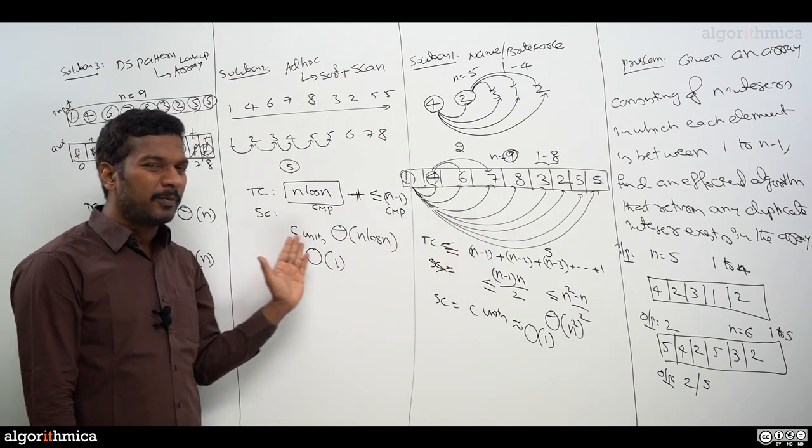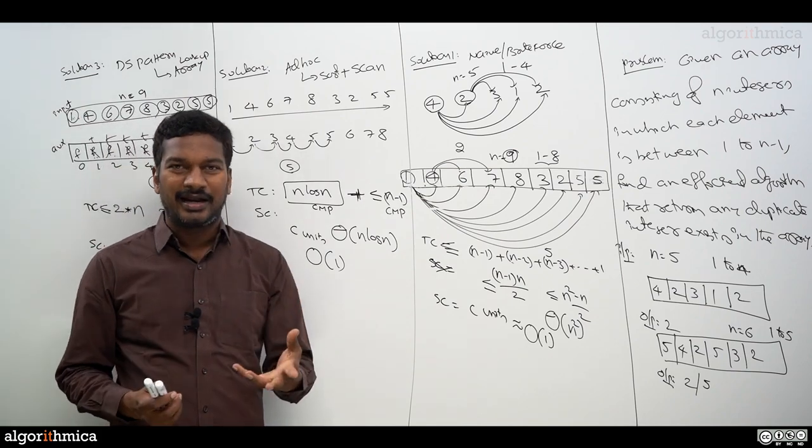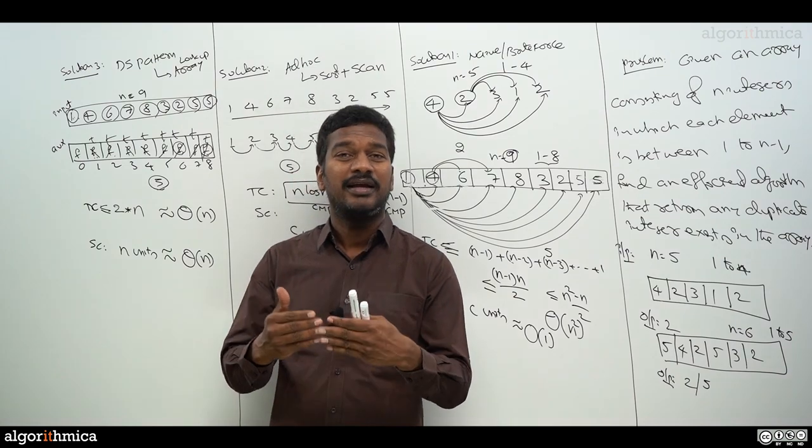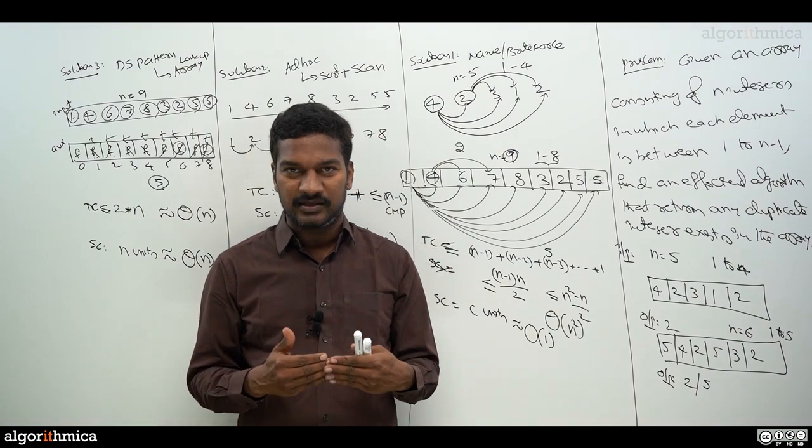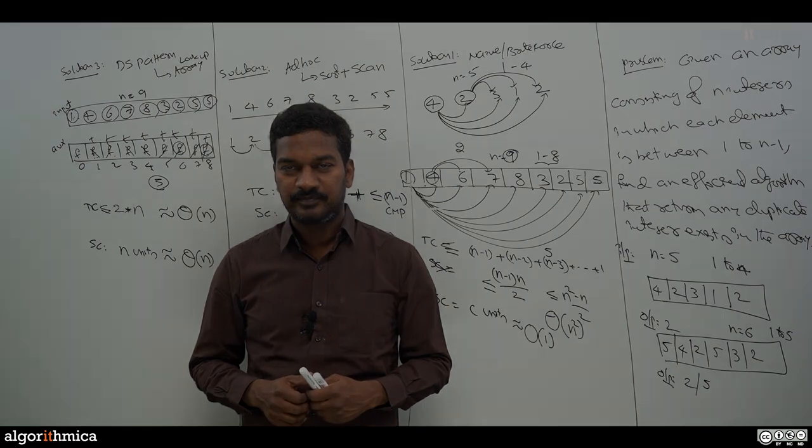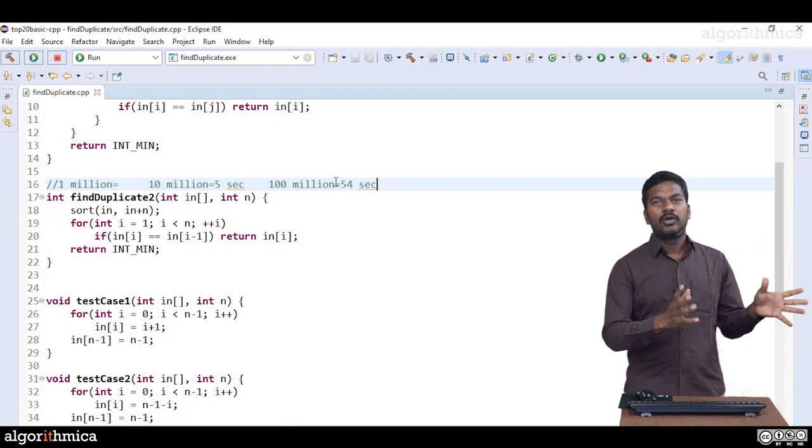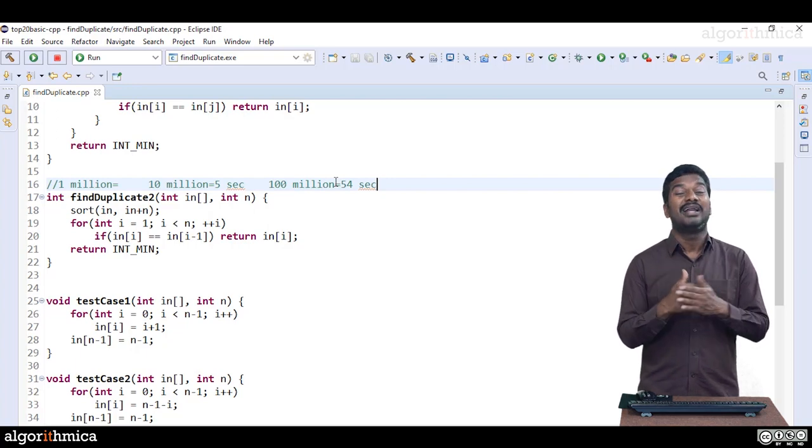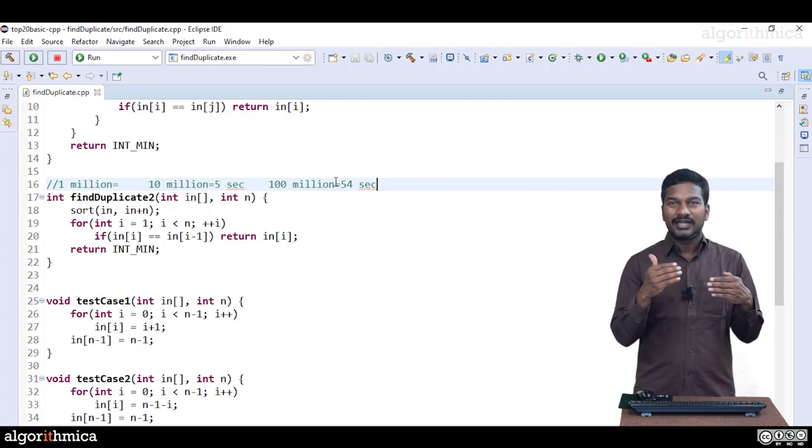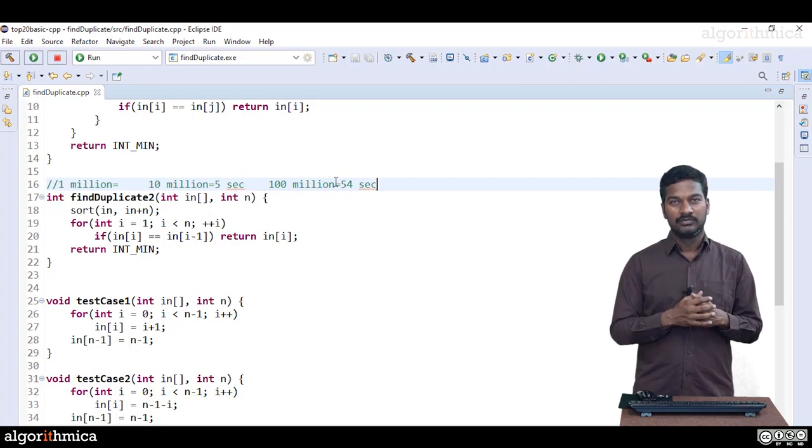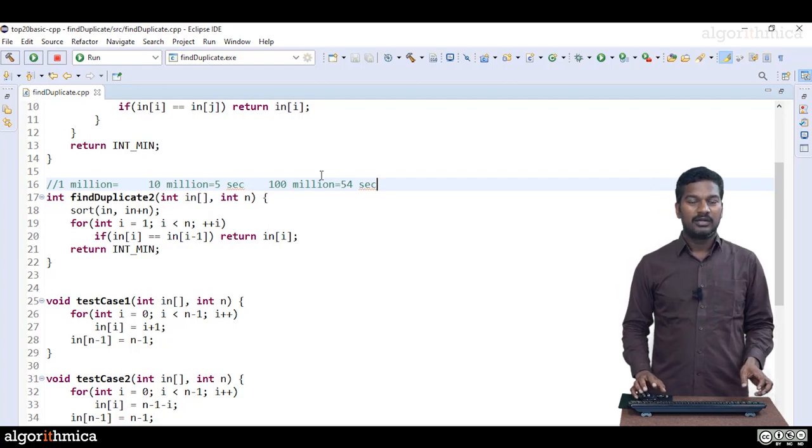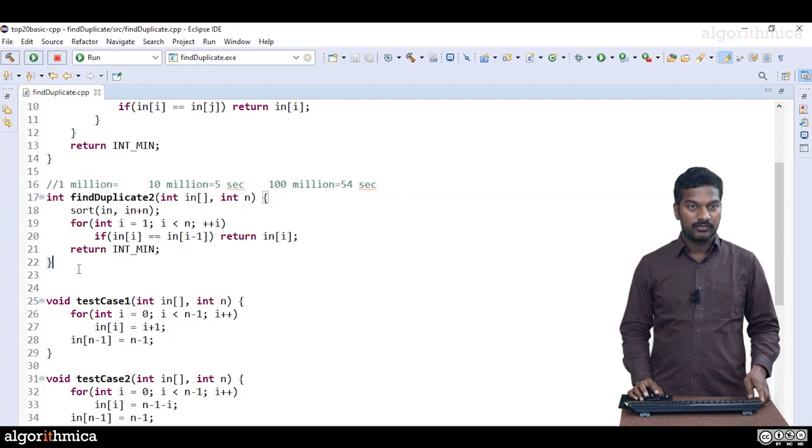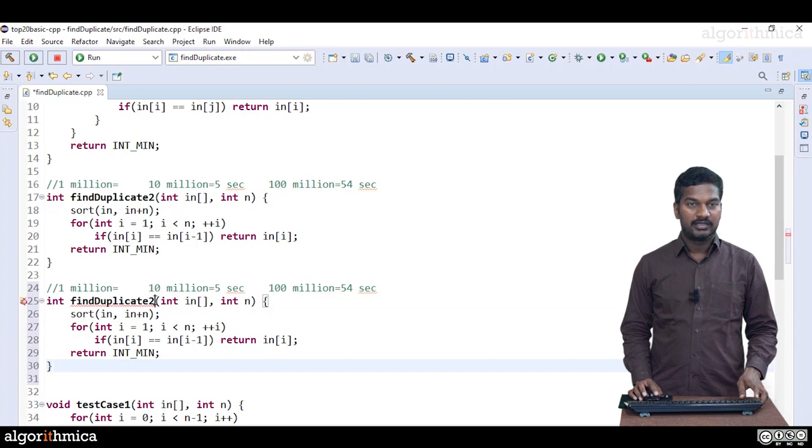So this is n and n. Seems to be performing very good theoretically. Again, to get clarity on the intuition behind n and how well it is performing, we must code it and experience it. Let's move on to the coding. Now we got solution number three where we are able to get n algorithm with n space. Let's see in practice how this algorithm will look like.